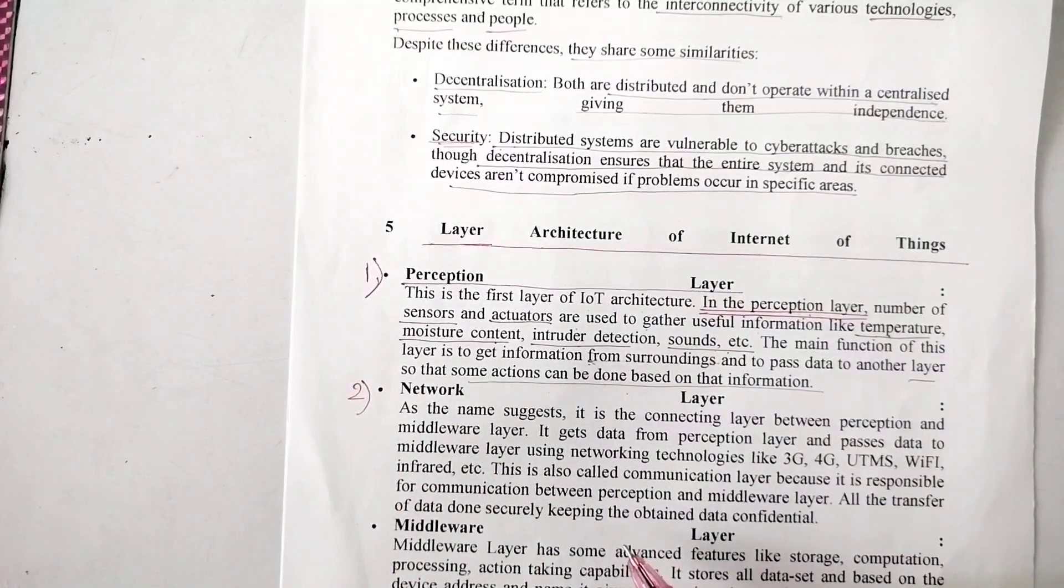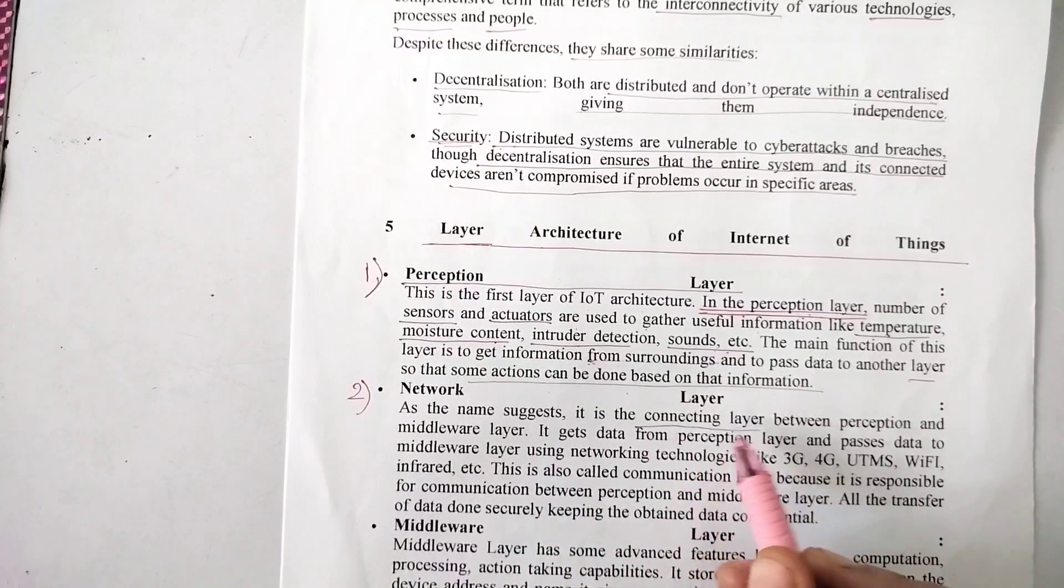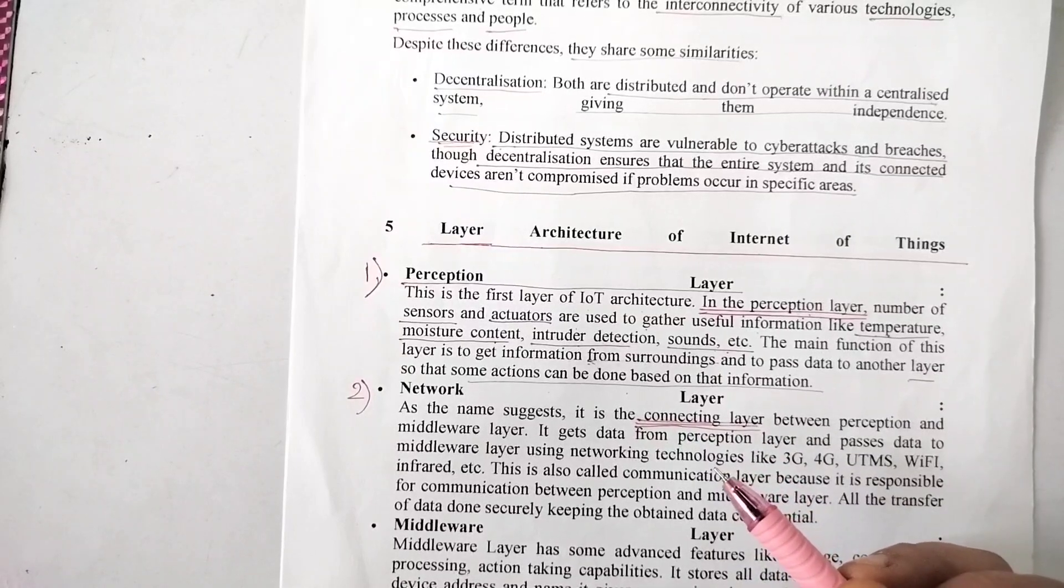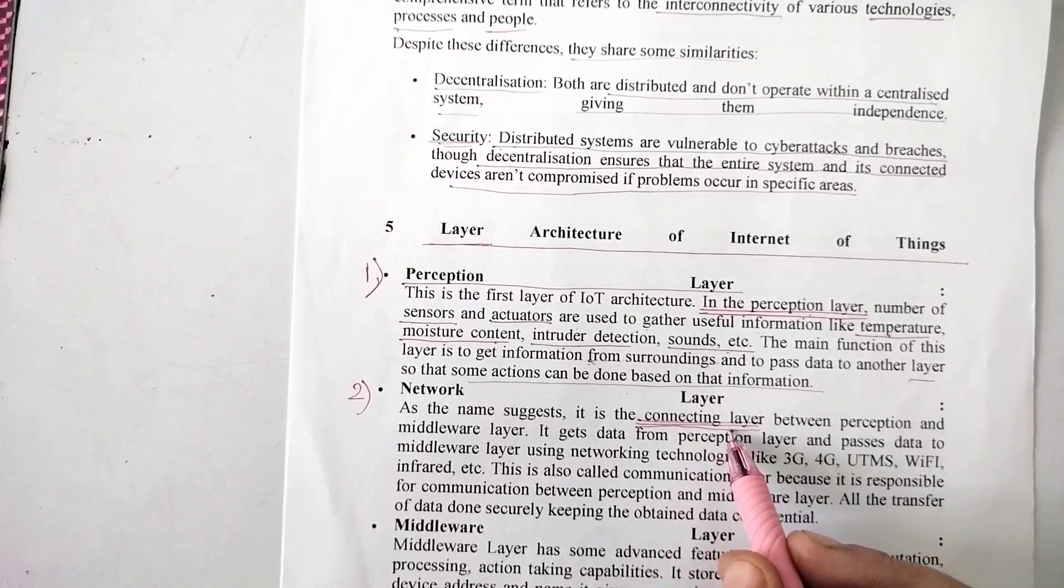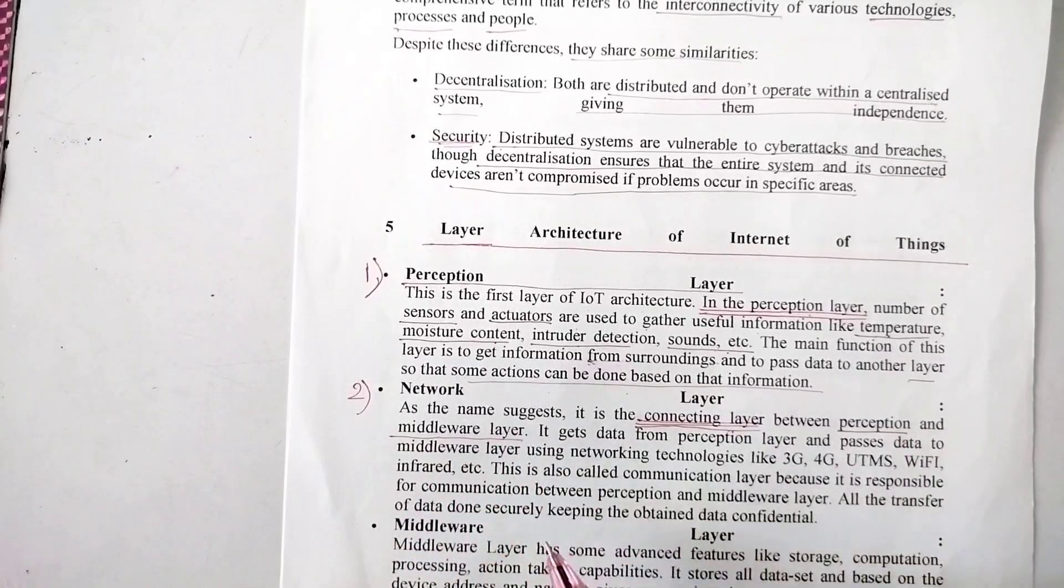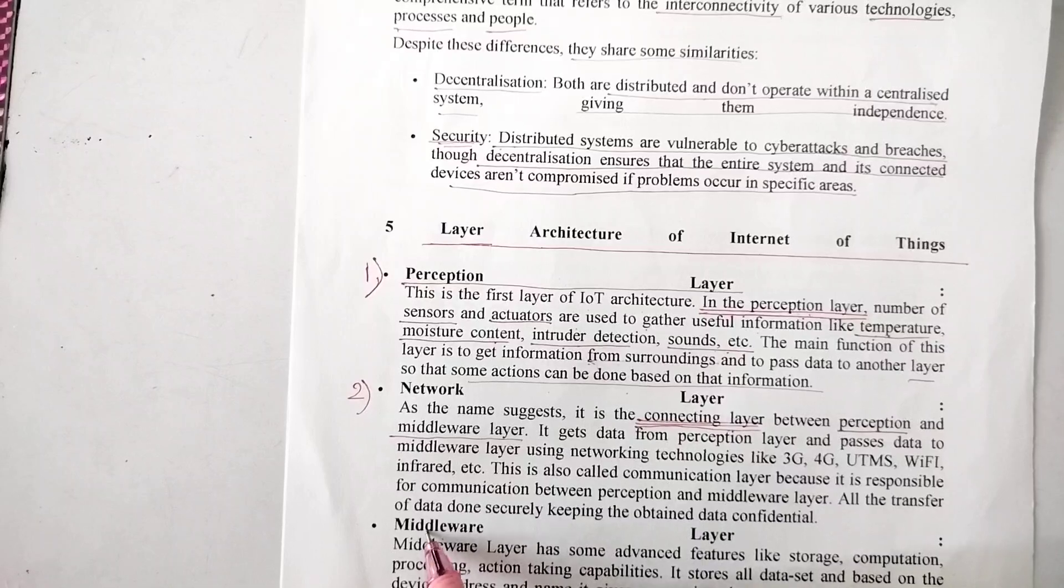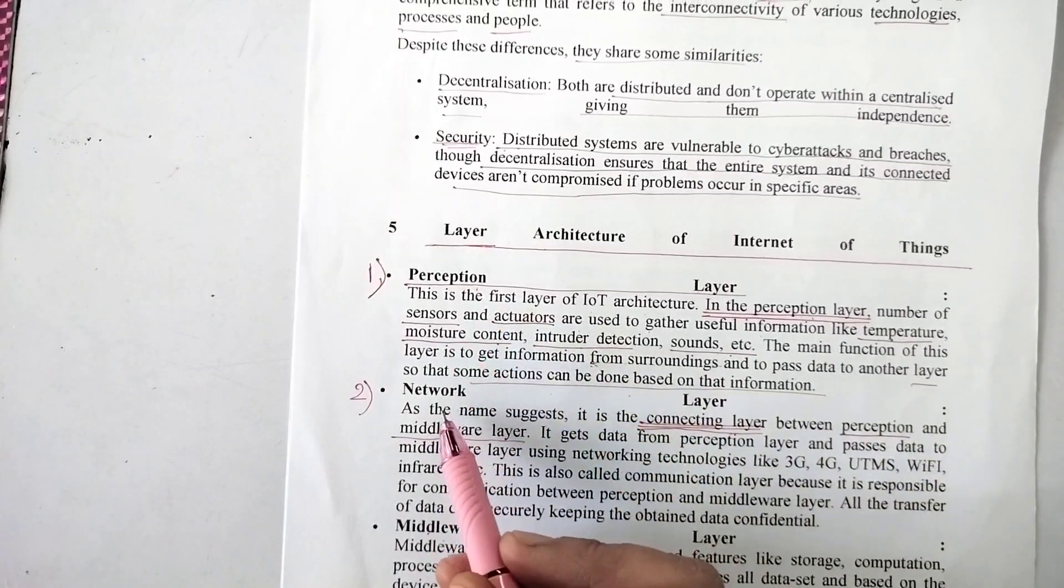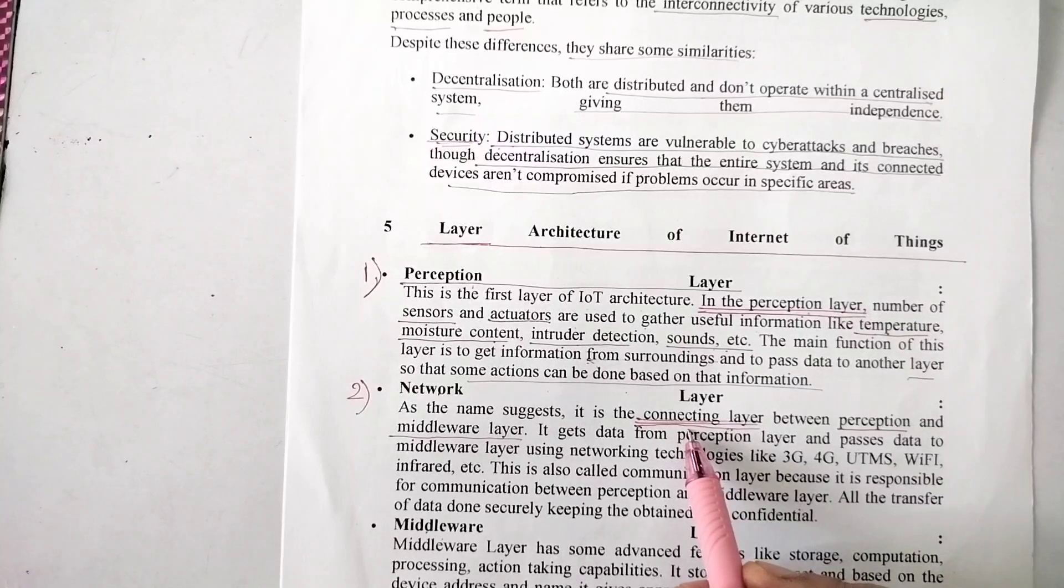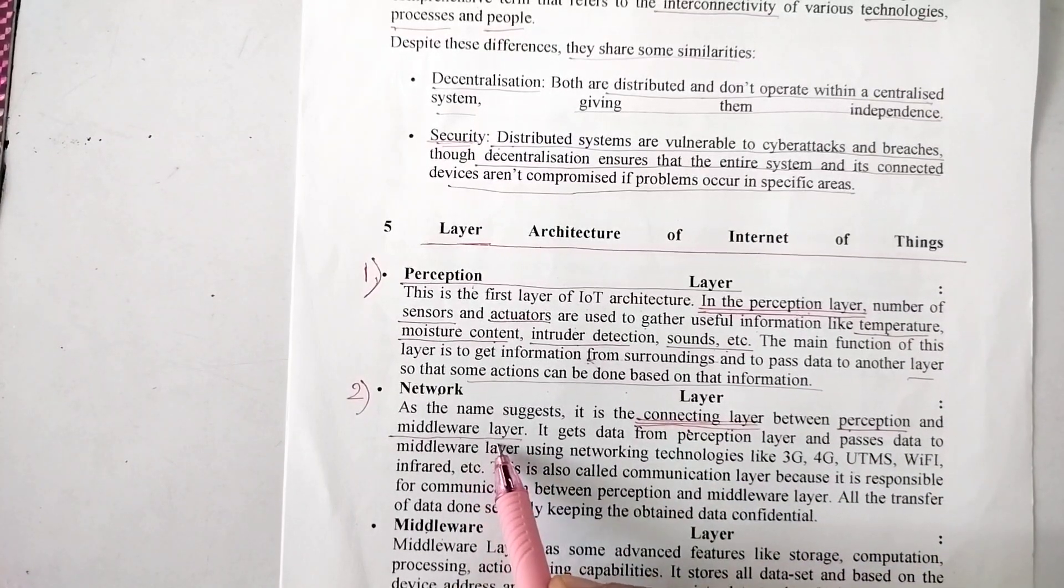As the name suggests, it is a connecting layer. When I say network layer, that means the layer that provides you with networking. It is the connecting layer between the perception layer and the middleware layer. The middleware layer is below the network layer and the perception layer is above it. The network layer connects these two layers.